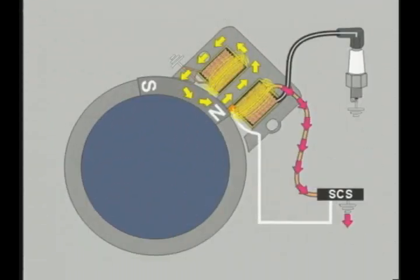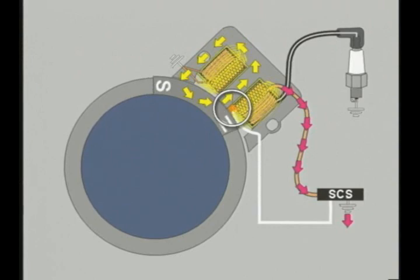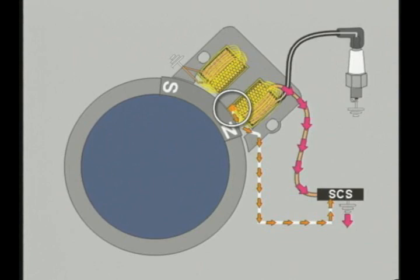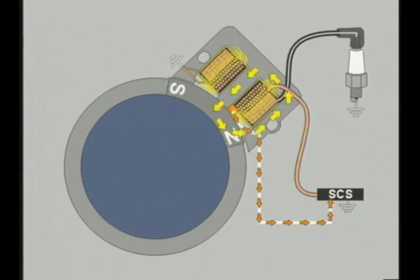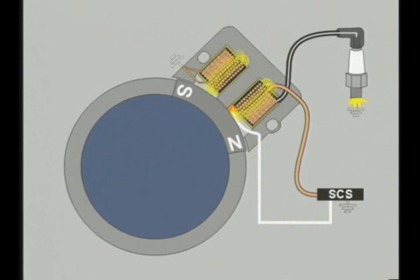In a direct induction system, a separate triggering coil is positioned so a voltage is induced at the same instant the magnetic flux reverses in the core. The induced voltage triggers the SCS to open the primary circuit. The resulting collapse of the electromagnetic field around the primary coil directly induces high voltage in the secondary windings.